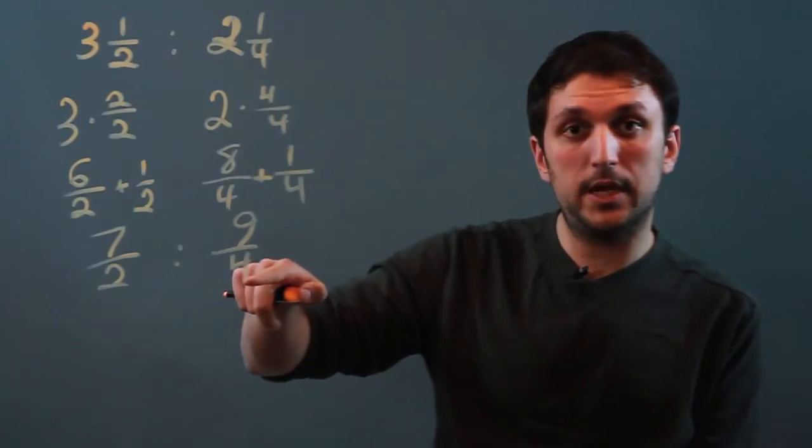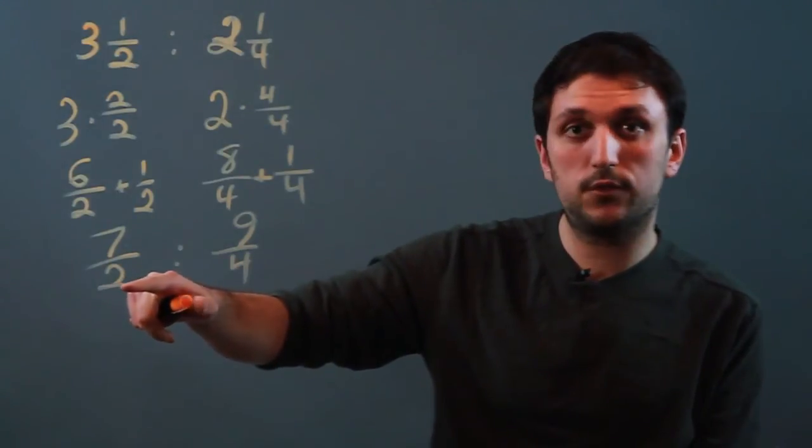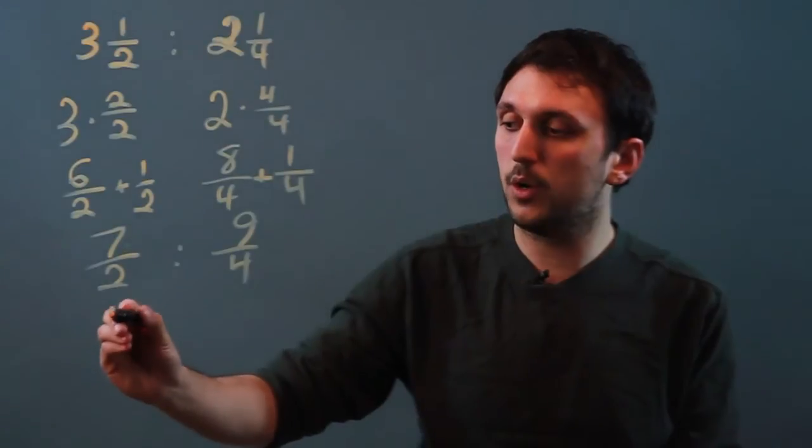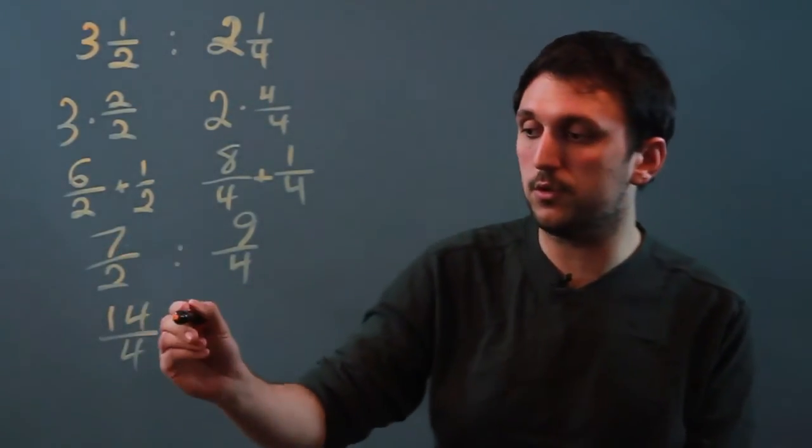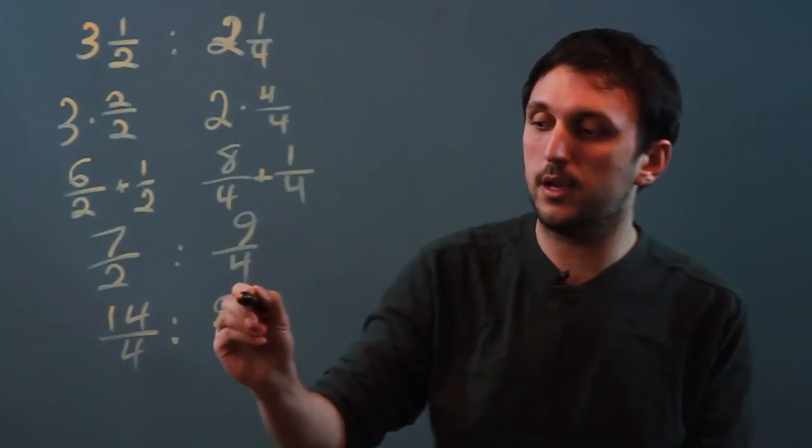Well we have a denominator of four and a denominator of two. Maybe we double this and we say 14 over four which is the same thing as seven over two is to nine over four.